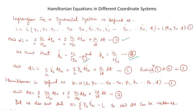Now if we put the value of del L over del qk equal to pk_dot, and del L over del qk_dot equal to pk into equation number 2, then we can write dL equal to sigma_k pk_dot dqk plus sigma_k pk dqk_dot plus (del L / del t) dt. Let us say it is equation number 5.